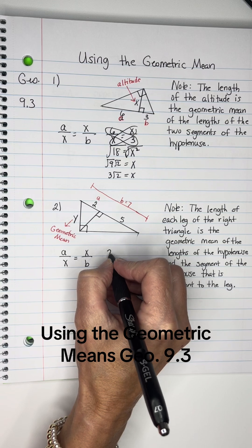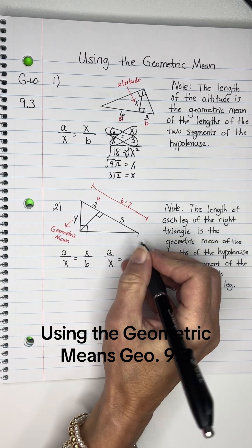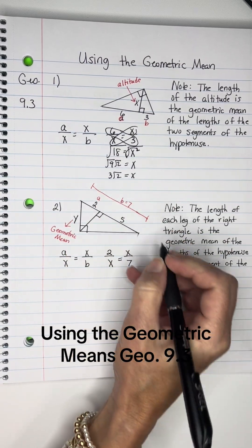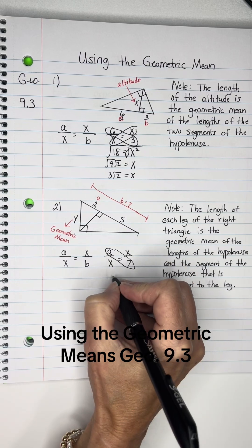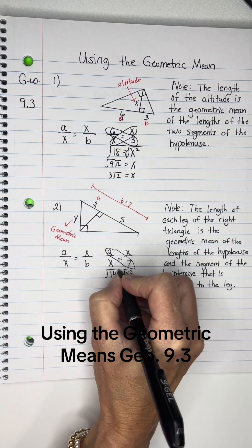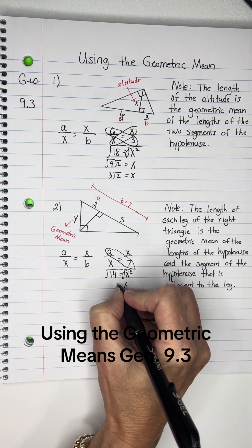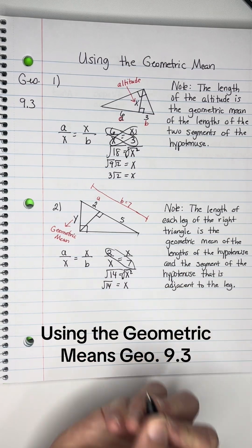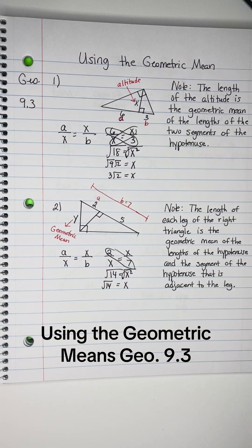So this problem will be 2 over X equals X over the 7, which comes from 2 plus 5. So I have 14 equals X squared. Take the square root of both sides and the square root of 14 won't break down. They may ask you for a decimal or they may let you leave it just like that.